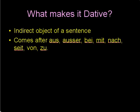It's dative if it is the indirect object of a sentence — a noun, that is. Or if it comes after aus, außer, bei, mit, nach, seit, von, zu. And these are dative prepositions.